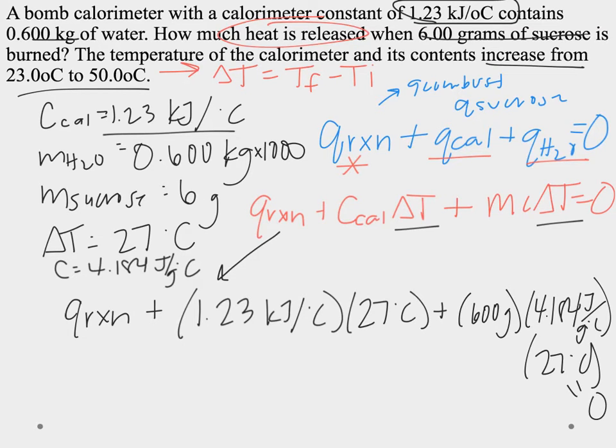So now I'm going to go through and I'm going to cancel units. So we have Q reaction plus 1.23 kilojoules over degree Celsius times degree Celsius. Alright, so right now for Q_cal, we're at kilojoules.